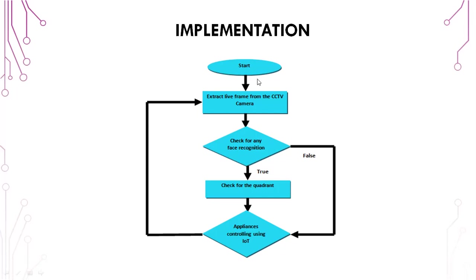In another phase, it starts and extracts a live frame from the CCTV and checks for any face recognition. If there is no person present in the image — that is, the condition is false — then it goes back to appliance control where the LED will not glow.